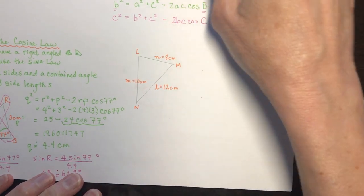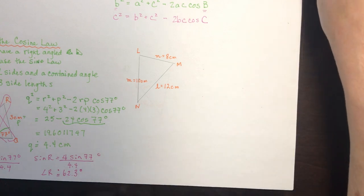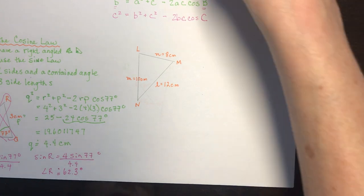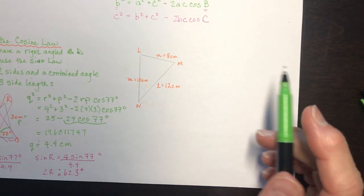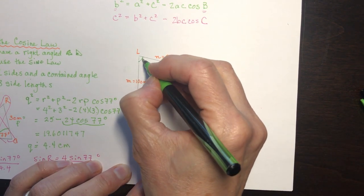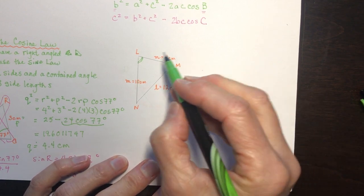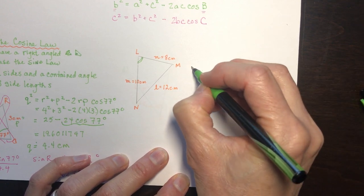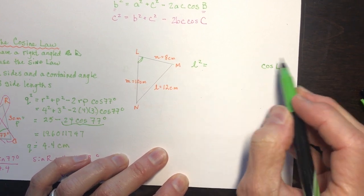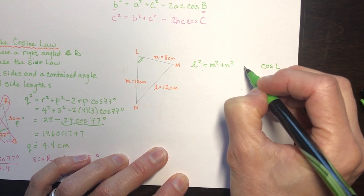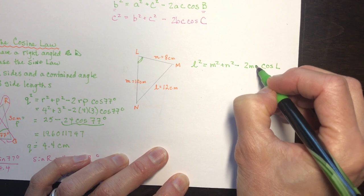The second reason to use the cosine law is when you have three side lengths but no angles, like triangle LMN. To find angle L, start by writing the cosine law with L squared: L squared equals M squared plus N squared minus 2MN cosine of L. Now rearrange to isolate cosine of L.